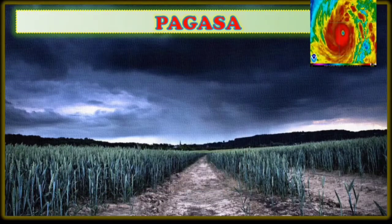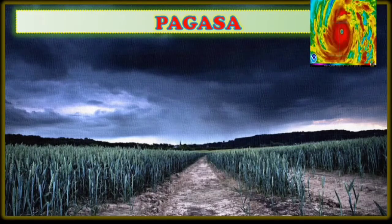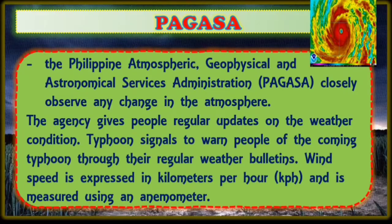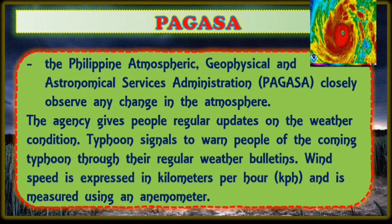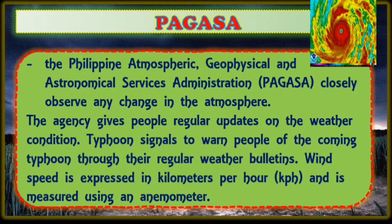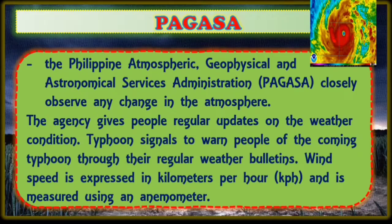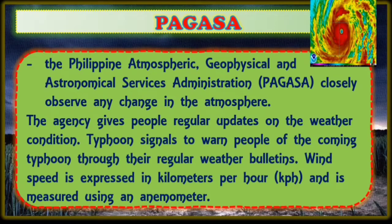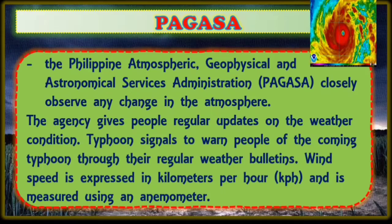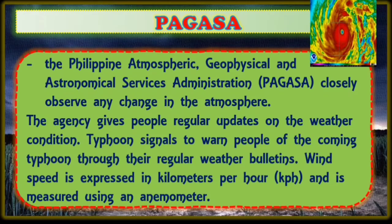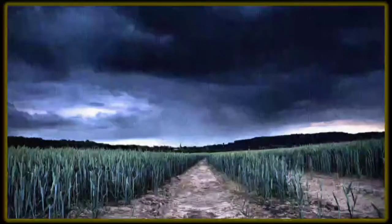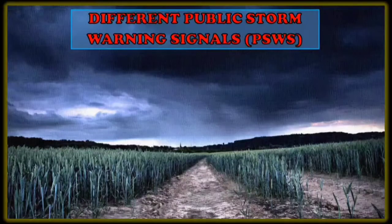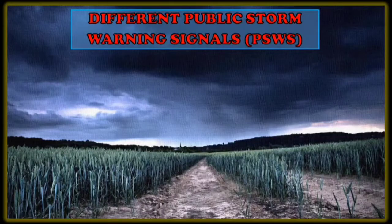The Philippine Atmospheric, Geophysical and Astronomical Services Administration, or PAGASA, closely observes any changes in the atmosphere. They are the agency focused on monitoring what happens in the atmosphere. The agency gives people regular updates on the weather condition and typhoon signals to warn people of the coming typhoon through their regular weather bulletins. Wind speed is expressed in kilometers per hour and is measured using an anemometer.